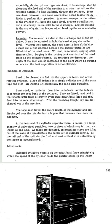At the feed end of the cylinder separator, there is naturally a large quantity of undersized particles, two or three of which may fall into an indent at one time. As they are depleted, intermediate sizes are lifted out of the mass at approximately the center of the cylinder length. At the tail end of the cylinder, the final and most precise selection by the indents is accomplished.